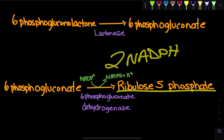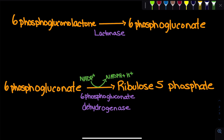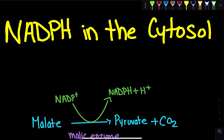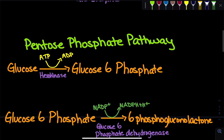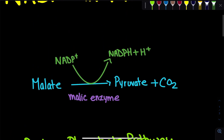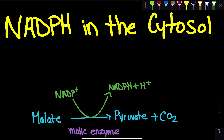As a result, we also get ribulose 5-phosphate, which is a precursor for many other processes. It can be used to make nucleotides, or converted to ribose 5-phosphate for use in carbon fixation, for example. In summary, there are two reactions that produce NADPH in the cytosol: the malic enzyme reaction and the pentose phosphate pathway, seen in higher eukaryotes. Having cytosolic NADPH is essential because it is required for anabolic processes such as fatty acid synthesis and carbon fixation.